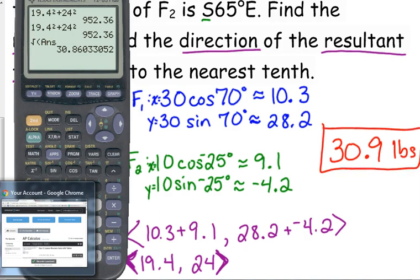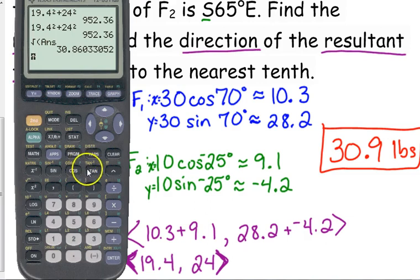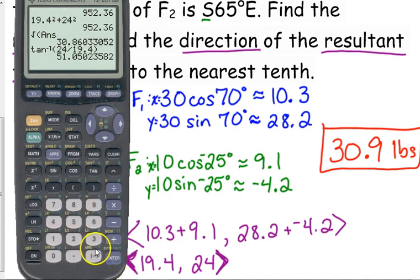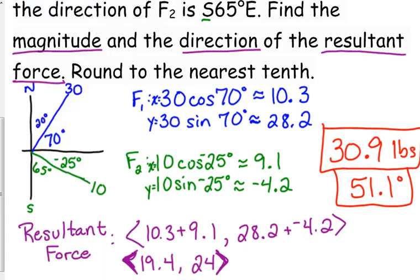And we also want the angle, so we do the inverse tangent of the Y over the X. And make sure that angle's in the right quadrant. We're in the first quadrant. 51 degrees is in the first quadrant. So, those are the actual answers that this question is asking for.